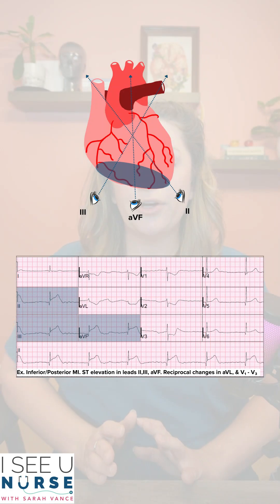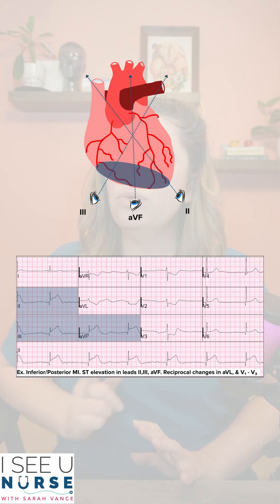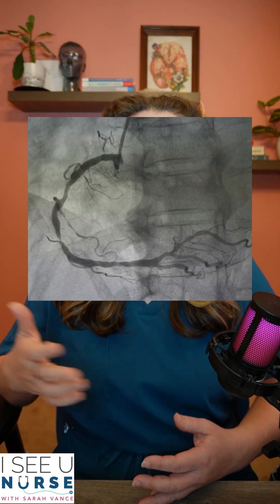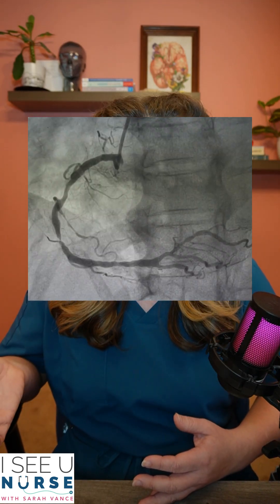Remember that the leads that correlate with an inferior wall MI are going to be leads II, III, and aVF — that's where you're going to see your ST elevation. And in the majority of patients, the inferior wall is going to be supplied by the right coronary artery.